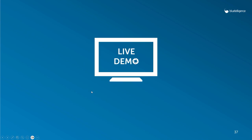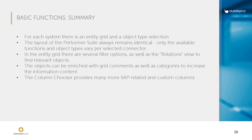Let's go back to the presentation to summarize this lesson. For each system, there is an entity grid and object type selection. The layout of the Performa Suite always remains identical — only the available functions and object types vary per selected connector. In the entity grid, there are several filter options as well as the relation view to find relevant objects. A lot of valuable insights can already be gathered without using any of SystemScout's analysis functions. Objects can be enriched with grid comments and categories to increase information content, and the column chooser provides many more SAP-related and custom columns. This was the last lesson of the first chapter. I hope you gathered some basic knowledge and feel ready to learn more about the products of the Performa Suite. All the best and see you soon!